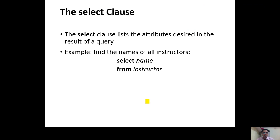The SELECT clause lists the attributes desired in the result of the query. For example, if we want to find the names of all instructors, we write SELECT NAME FROM INSTRUCTOR. It will display all the names which belong to the instructor table.